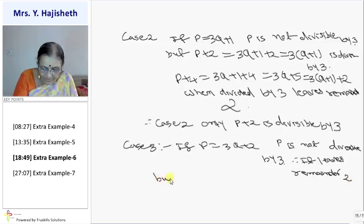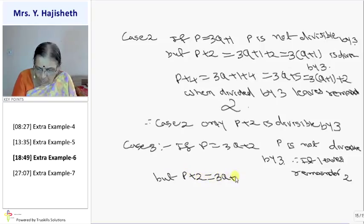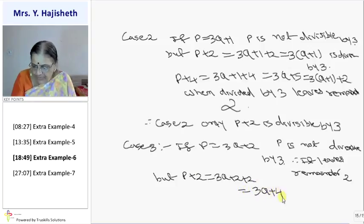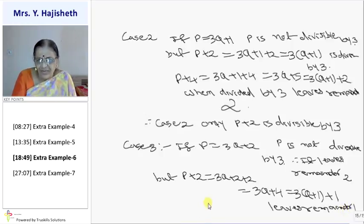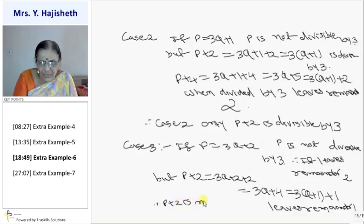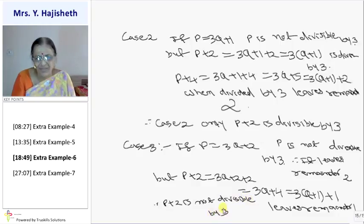But p plus 2 can be written as 3q plus 2 plus 2. So again it is 3q plus 4. It can be written as 3 times q plus 1 plus 1. Here also leaves remainder 1. Therefore p plus 2 is not divisible by 3.